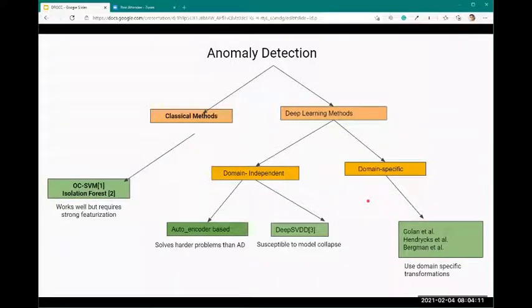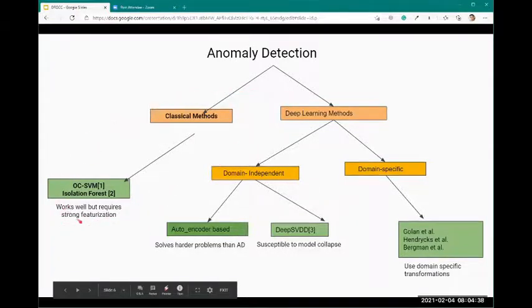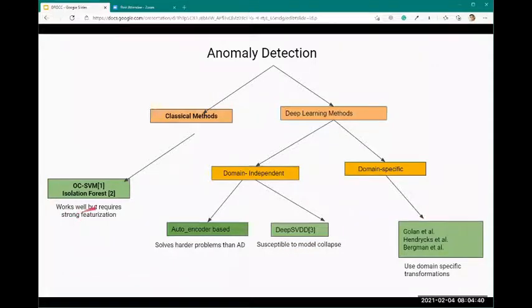Prior work on anomaly detection includes classical methods which try to model the typical data distribution with simple functions, like constructing a minimum enclosing ball. But on complex domains like images and time series, it does not work well, especially where featurization is not a trivial task.